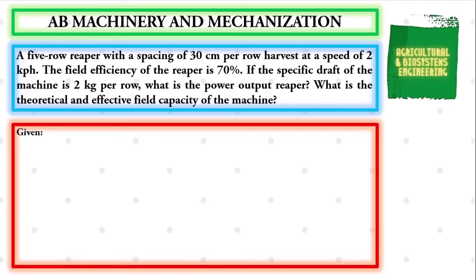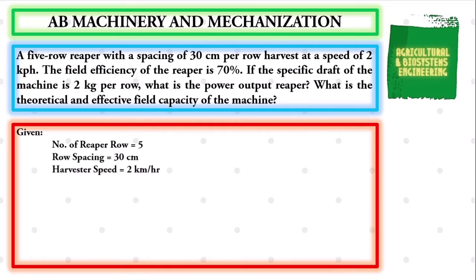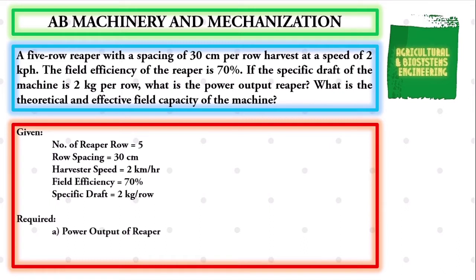We first identify our given. We have the number of reaper rows to be 5, the row spacing to be 30 cm, the harvesting speed to be 2 km per hour, the field efficiency to be 70%, and the specific draft to be 2 kg per row. The required values are the power output of the reaper, the theoretical field capacity, and the effective field capacity.